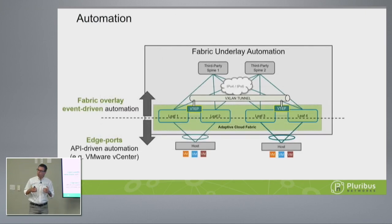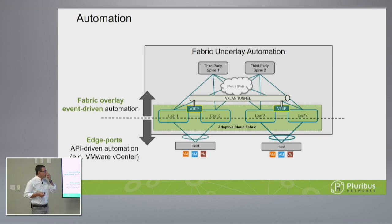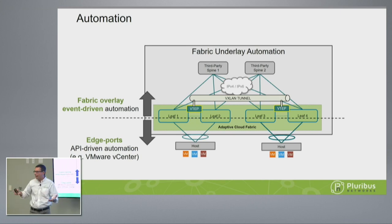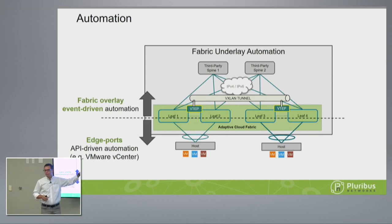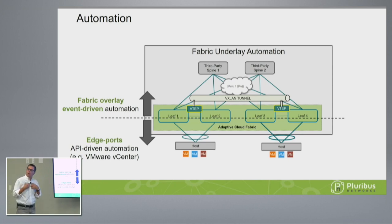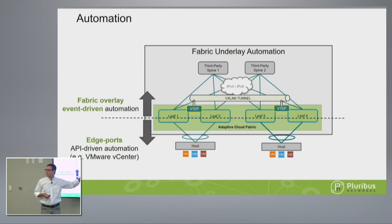There are three levels of automation in the systems. Number one: fabric underlay automation — this is how you automate the build-out of your BGP fabric, or whatever it is: BGP fabric, SPF fabric, layer 2 fabric. You have to automate that, and for that we have tools. We have our own management tool, but you can also use Ansible. This is actually table stakes — it's expected these days.